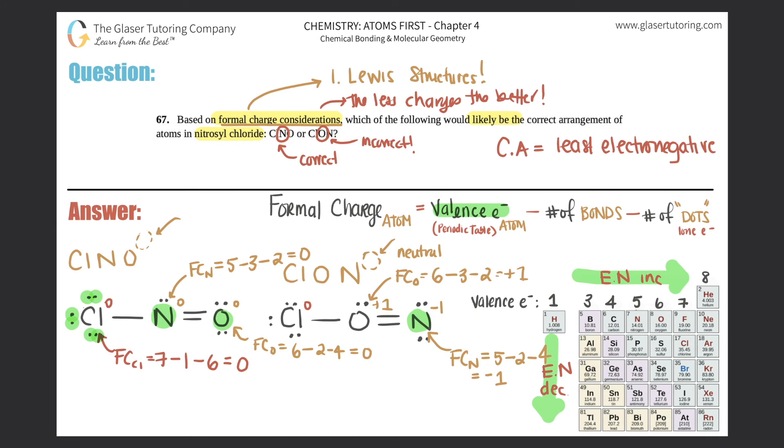Which means that this compound, ClNO, would be the correct arrangement. But we already knew that before by just knowing that the central atom always has to be less electronegative. And that's that.